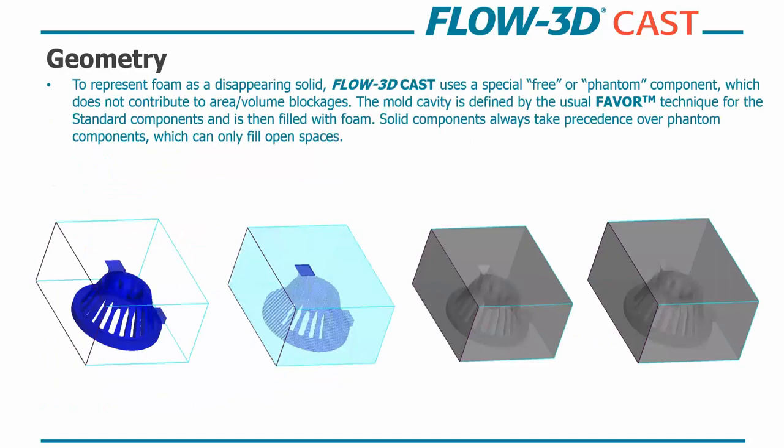And we do this with a proprietary meshing tool called FAVOR. That's fractional area volume representation. What this does is eliminate zigzag direction changes by smoothly blocking out fractional portions of grid cell faces and volumes. So once we've meshed our geometry, what we do is we bring in our foam component. So to represent foam, Flow3Dcast uses what we call a free or phantom component, which does not contribute to area or volume blockages. So what we do is we bring in our CAD geometry. We've meshed it. And then we've created an open volume here. And then this is used from here to here is that FAVOR-ized technique. So we FAVOR-ed this, created an open volume. And then the standard component is then filled with foam. And solid components are always going to take precedence over the phantom components. And it will only fill, the phantom component is only going to fill the open space here. So now we have a foam pattern that's exactly our geometry. And from there we define our fill.